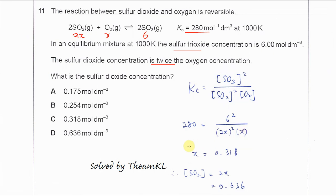After that, we will get the X. Many candidates stop here. Of course, this is not the answer because it's asked the concentration of sulfur dioxide. Sulfur dioxide is 2X.